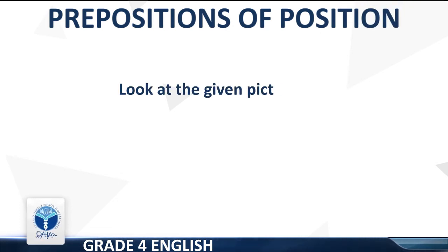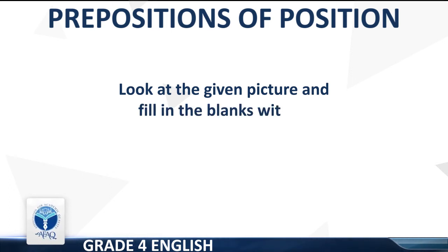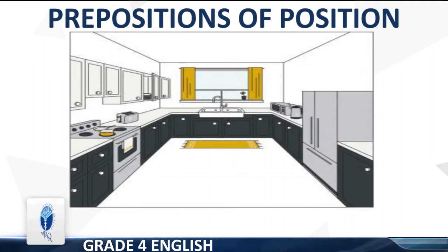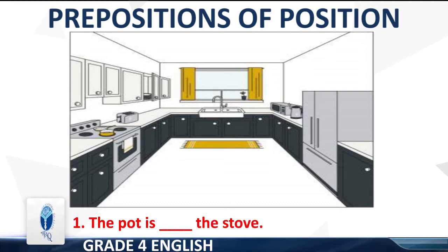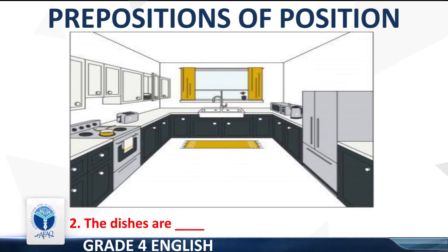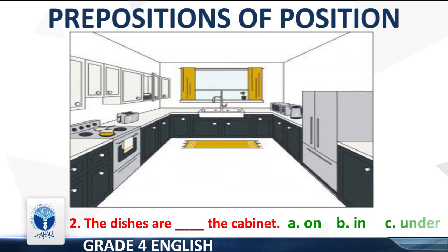Next worksheet: Prepositions of Position. Look at the given picture and fill in the blanks with the correct prepositions. Point 1: The pot is dash the stove. Options: A — on, B — in, C — under. The right option is 'on'. The sentence will be: the pot is on the stove. Point 2: The dishes are dash the cabinet. Options: A — on, B — in, C — under.